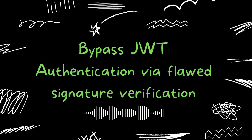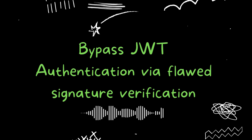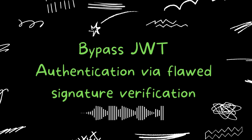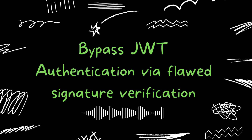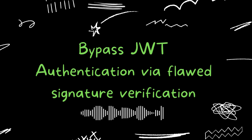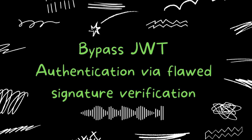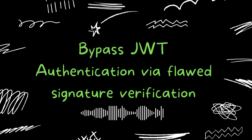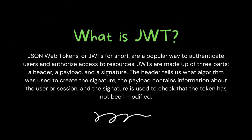Servers typically do not store the information contained in a JSON web token. They simply verify and decode the token and then authenticate the user according to the data. But if the server is not properly verifying the token, it is possible for an attacker to bypass authentication. That's what we are going to look at in this video. Let's start with a little introduction and then we will see the practical part.